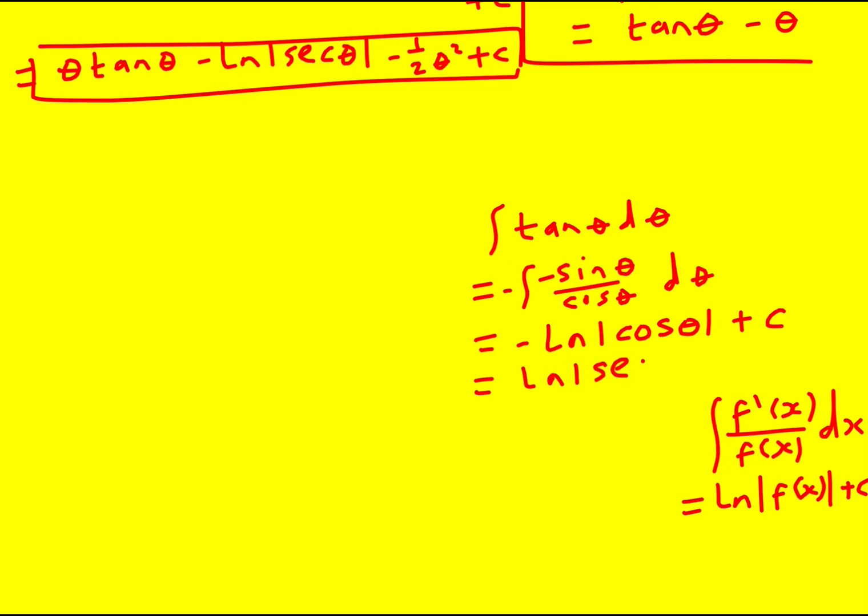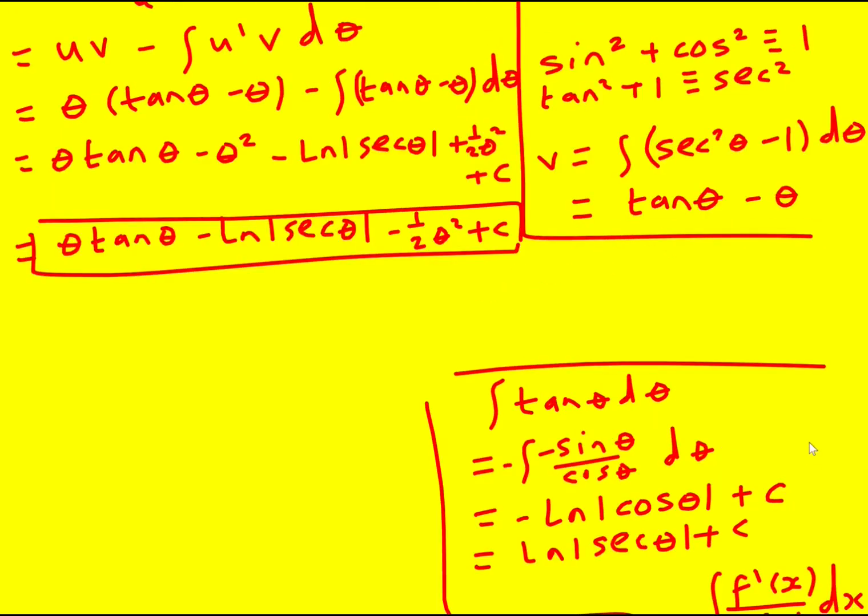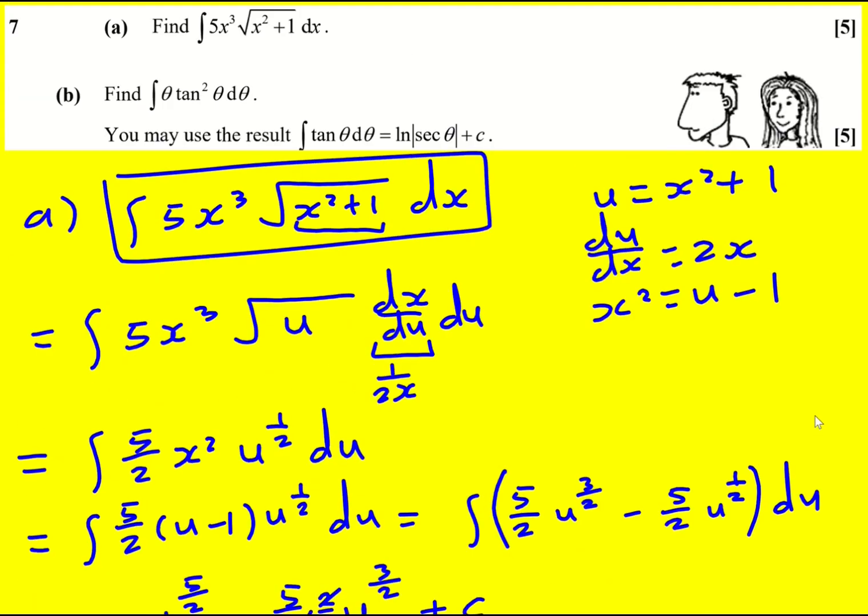And the minus we can actually raise because cos theta to the power of minus one which is where the sec comes from. Just explaining that result even though it's given to us. I think it's nice to do that.